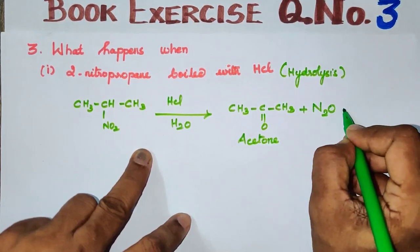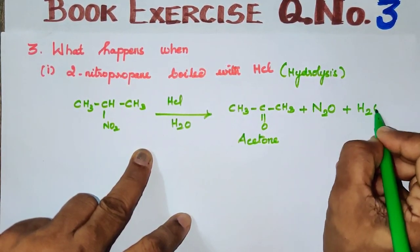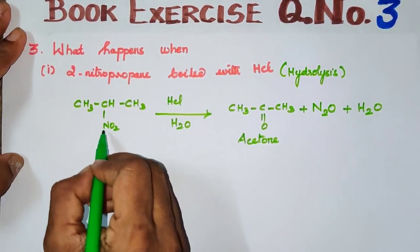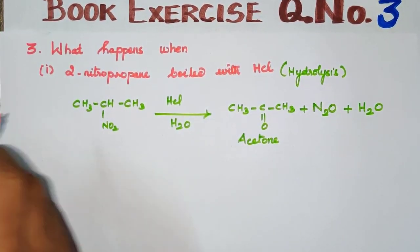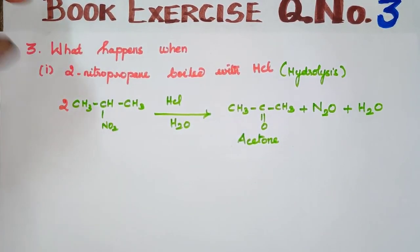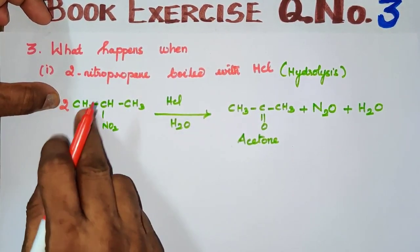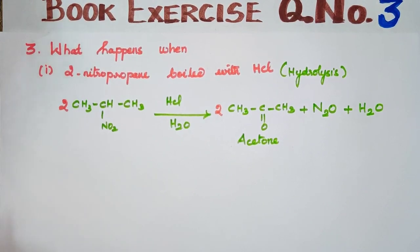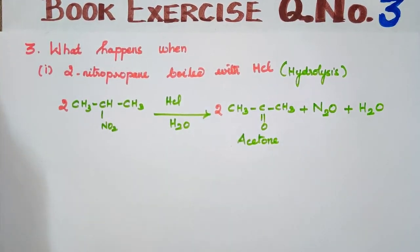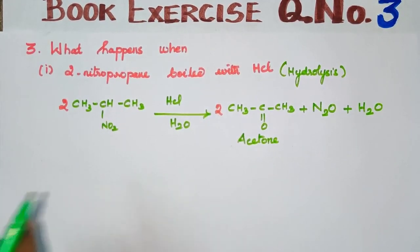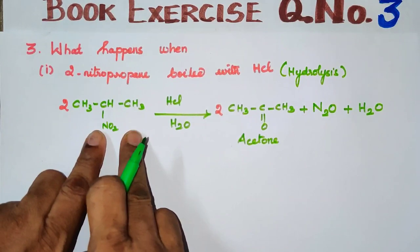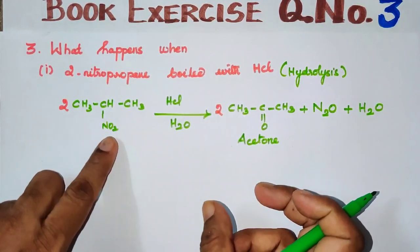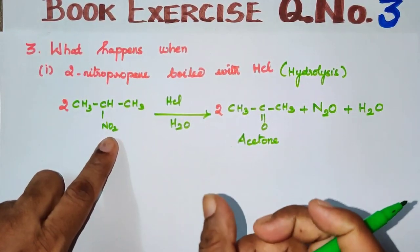The byproducts are N2O and H2O. Balancing the equation: 2 nitropropane with hydrochloric acid, boiled, gives acetone as the product. The equation is now balanced.